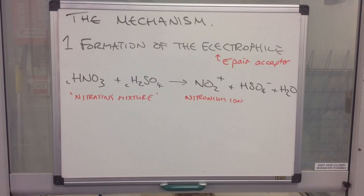So you can see I've added the extra detail there. The two acids are normally referred to as the nitrating mixture. So that's those two concentrated acids. And the electrophile, the NO2 plus ion, is what we call the nitronium ion.